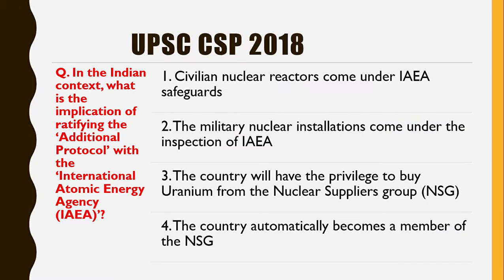A question was asked about IAEA in the UPSC Civil Services Preliminary Examination of 2018. The question was: In the Indian context, what is the implication of ratifying the additional protocol with the IAEA? Option 1: Civilian nuclear reactors come under IAEA safeguards. Option 2: Military nuclear installations come under IAEA inspection. Option 3: The country can buy uranium from the NSG. Option 4: The country automatically becomes a member of the NSG. The implication of the additional protocol is simply that civilian nuclear reactors come under IAEA safeguards — Option 1 is correct.